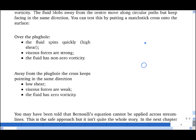This will be familiar to everybody. One tends to get rotation of the fluid around the plug hole. And if you were to put two matchsticks joined together in a cross shape over the plug hole, you'd find that over the plug hole the cross would spin around. Now in this region here, the fluid is spinning quickly, there's high shear, the viscous forces are strong, and the fluid has non-zero vorticity.